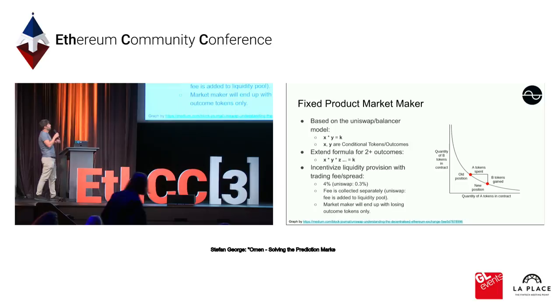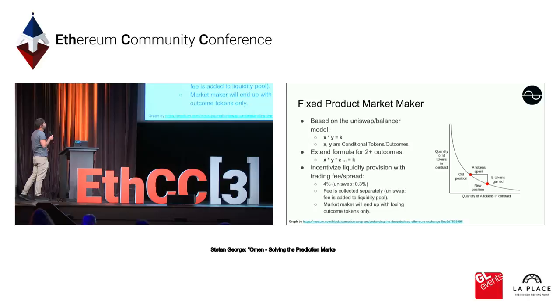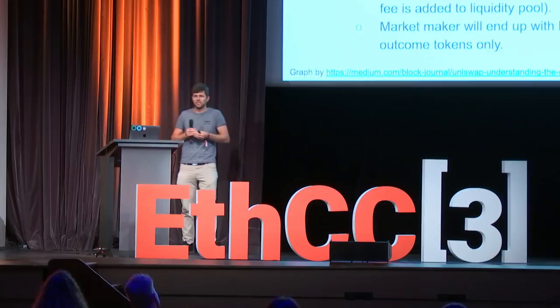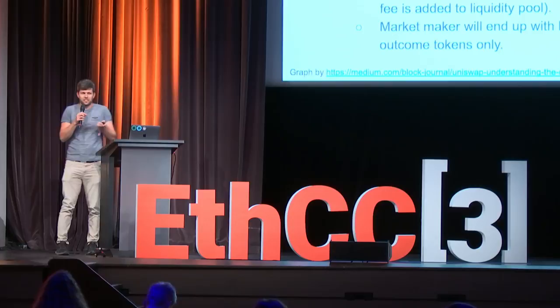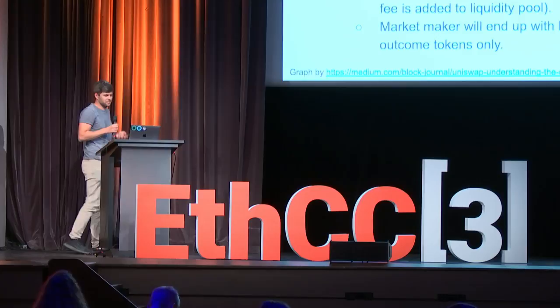Fortunately, it's very simple to extend the Uniswap formula — and that's what we did. You can basically just add tokens to the formula to allow trading an arbitrary amount of tokens within the same market maker. It's a concept also used by Balancer Finance. This is basically only limited by the amount of gas you can use, and we tested it — it works with about 32 outcomes.